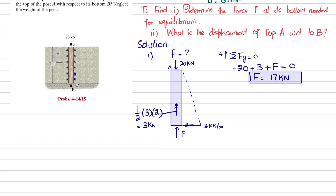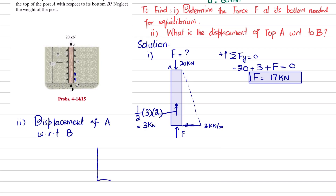Now we will find the displacement of point A with respect to point B. Since the load is uniformly increasing, the load changes at every point along the post. We will section the post at a distance y and draw the free body diagram. We have point A with the 20 kilonewton load, the uniformly increasing distributed load, and a reaction force F(y) when we cut at that location, because force changes along the length y.